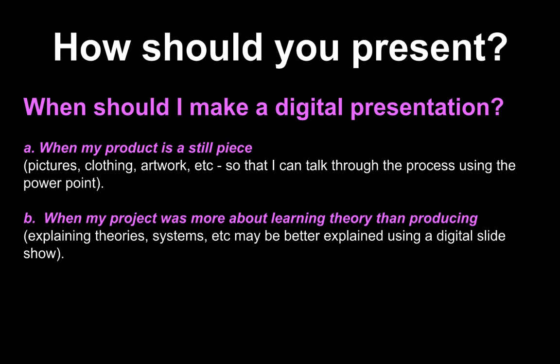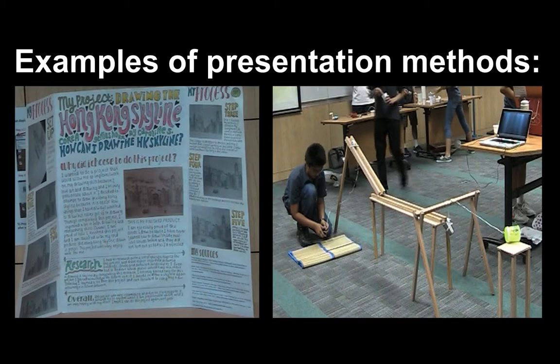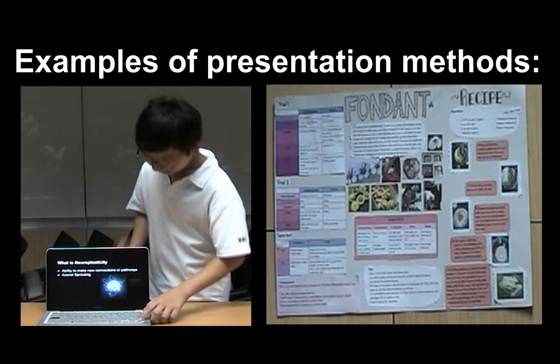Here are some pictures from years past. On the left, a poster board about drawing the Hong Kong skyline. On the right, an actual product a student made to safely set off a bottle rocket. Both approaches work for their product. Someone who made food set up all the different steps — recipes, trials, and thoughts — on their poster board. And someone doing brain research used a digital slideshow, since you can't easily make a physical product about brain research.